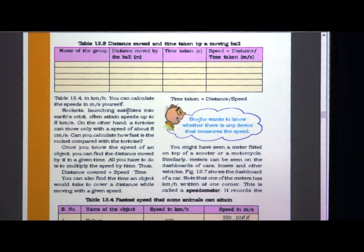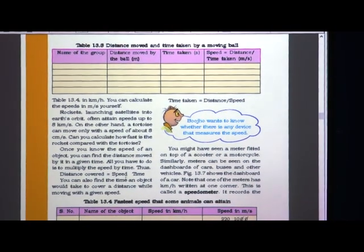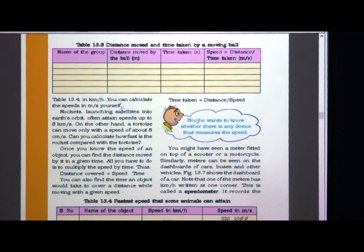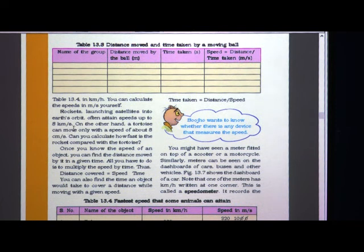One more example is given: rockets launching satellites into Earth's orbit. These rockets also have a particular speed needed to move into Earth's orbit. Their average speed often attains up to 8 kilometers per second. These rockets can cover 8 kilometers in each second — that is a very high speed.